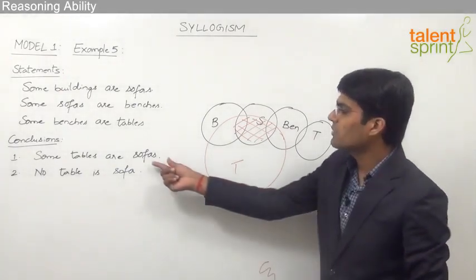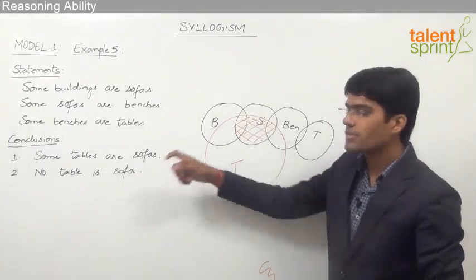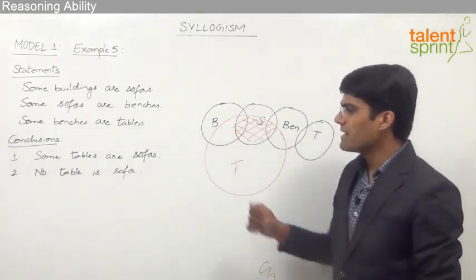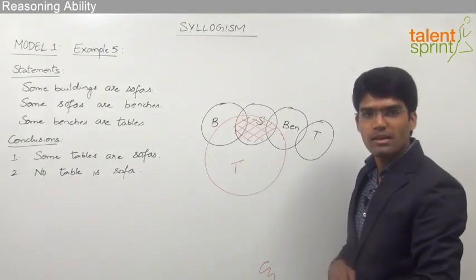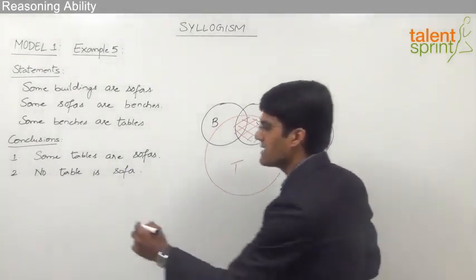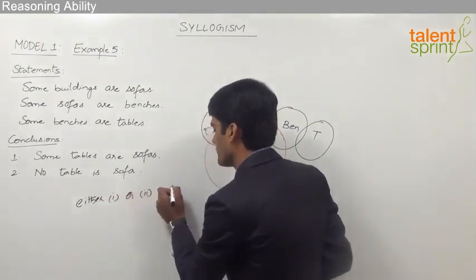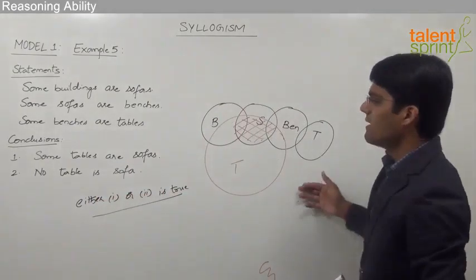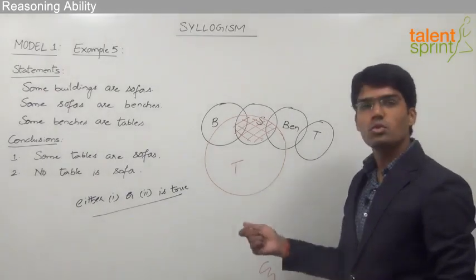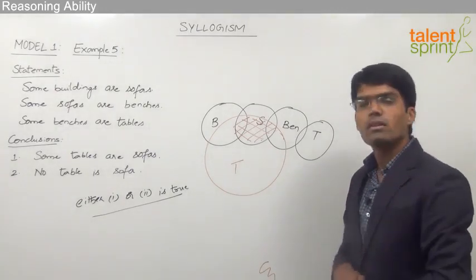So, conclusion one is true in the second diagram but not in the basic diagram, and conclusion two is true in the basic diagram but false in the second diagram. Because this is a complementary pair, either one diagram or the other has to be correct. Therefore, either conclusion one is true or conclusion two is true, and the answer for this question should be: either one or two is true.